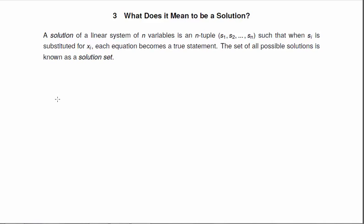So what does it mean to be a solution of a system? A solution of a linear system of n variables is an n-tuple, S1 through SN, such that when SI is substituted for XI, each equation becomes a true statement. The set of all possible solutions is known as a solution set.